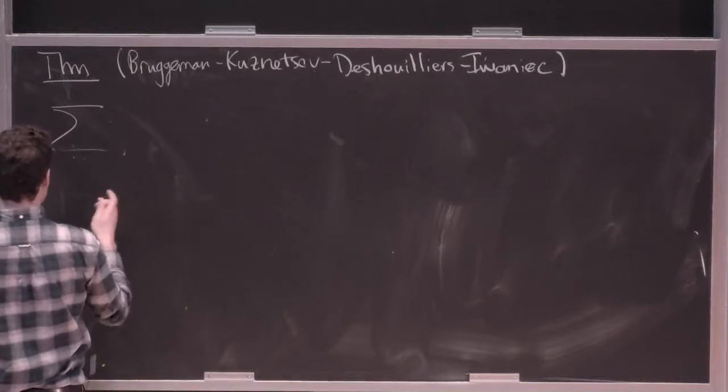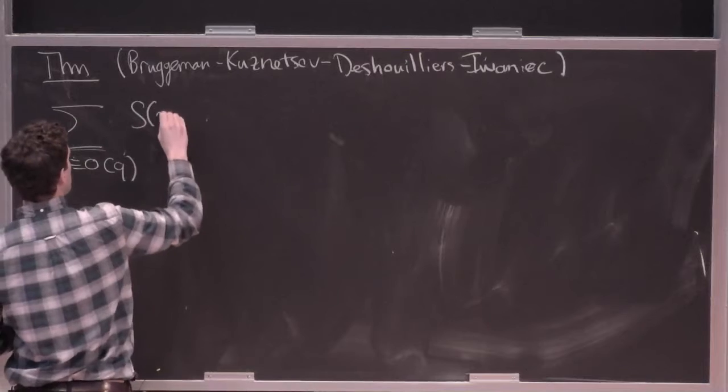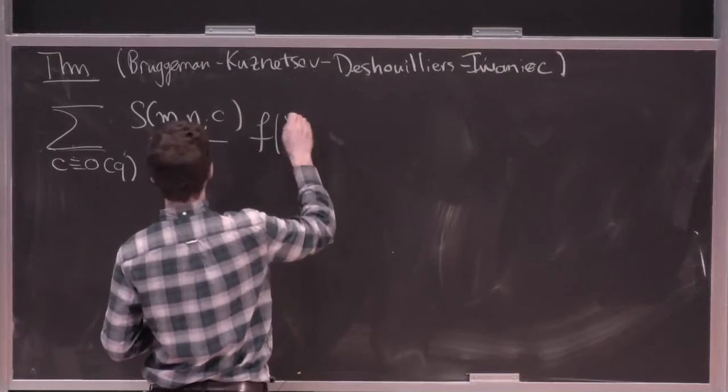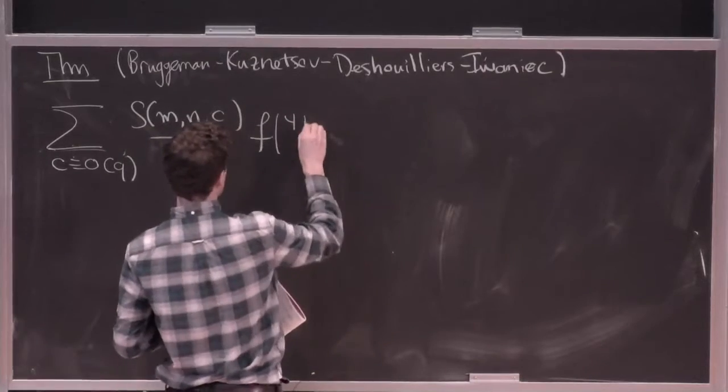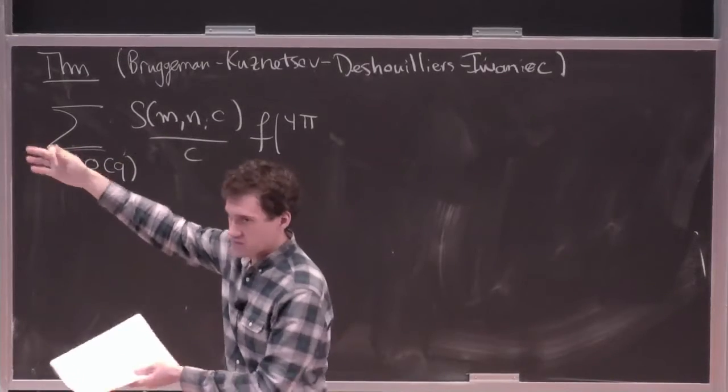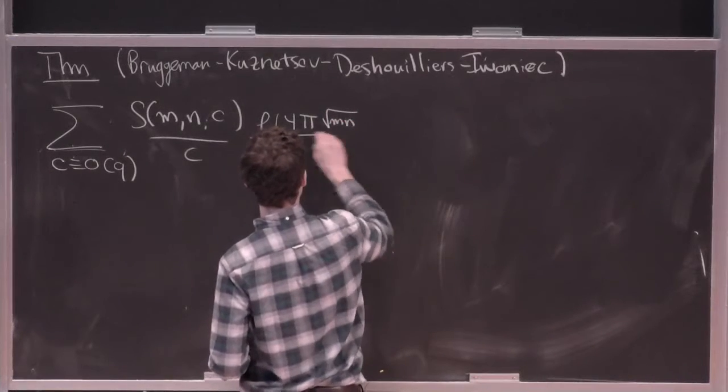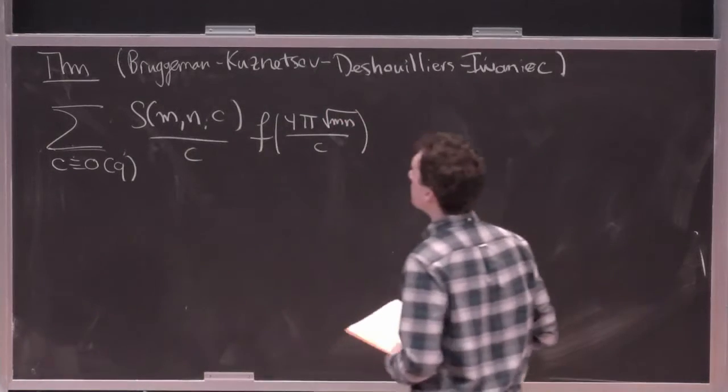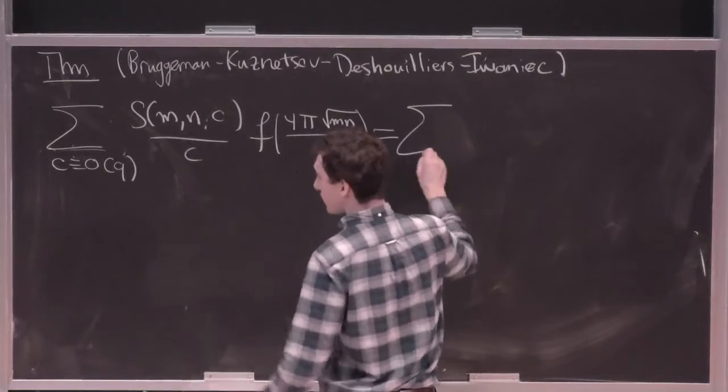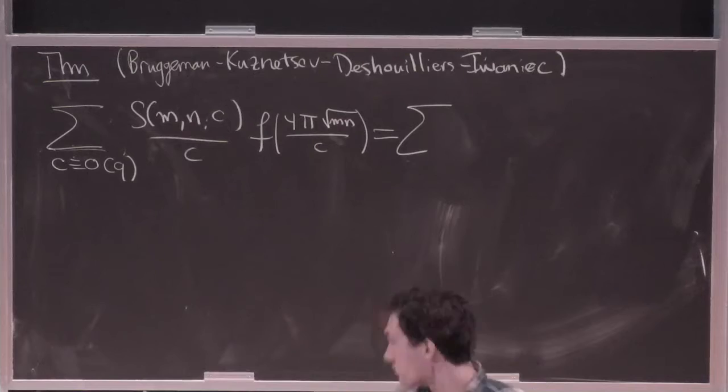So here it is. Okay, so you have the similar sum over c, which are 0 mod q, of these Kloosterman sums and now with an arbitrary function f of this class. Okay, so of course we haven't tried to optimize exactly for which test functions this holds, but this at least gives you a pretty wide range of test functions. Okay, and then this is just going to be equal to a sum of all of these different types of terms weighted by these different integral transforms.